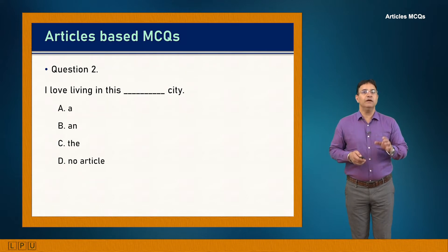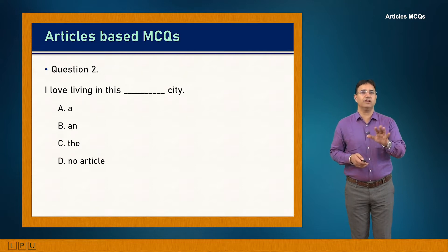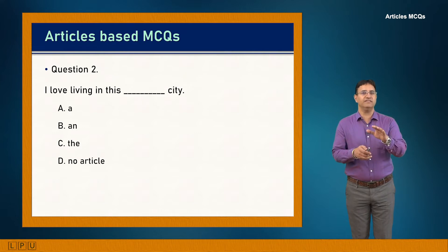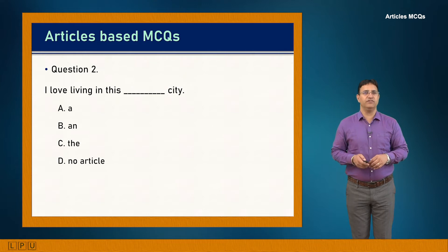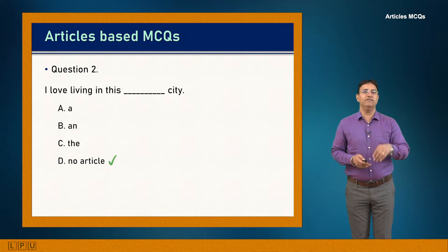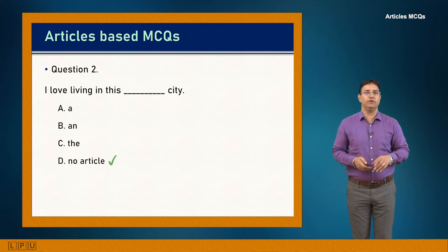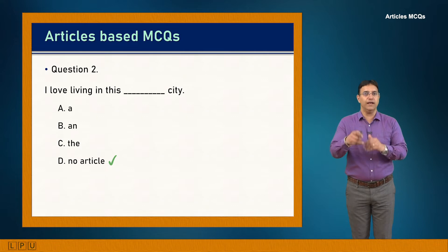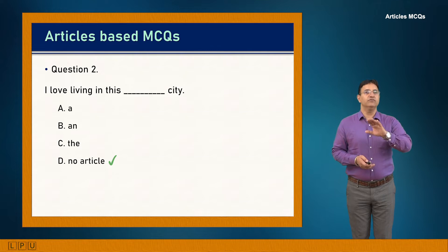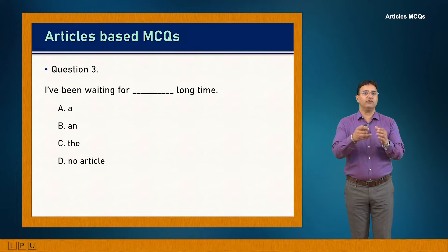Question 2: I love living in this dash city. 'A city' and 'city' would not fit; 'the city' creates unnecessary embedment. Since the determiner 'this' is already present, we do not need another determiner in the form of an article. The answer is D — no article: 'I love living in this city.'